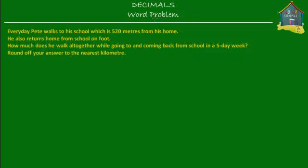Welcome to homecampus.com.sg. Let's solve this word problem on decimals. Every day Pete walks to school which is 520 meters from his home, and he also returns home from school on foot. How much does he walk altogether while going to and coming back from school in a five-day week? Round off your answer to the nearest kilometer.